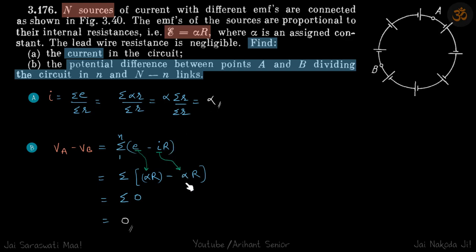So when we do that, we see this becomes sigma of 0, which is 0. Which means not just between points A and B, across the terminals of any battery, the potential difference is going to be 0.